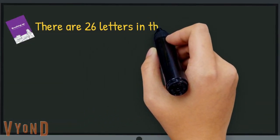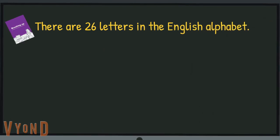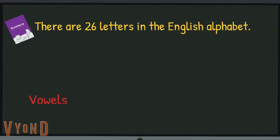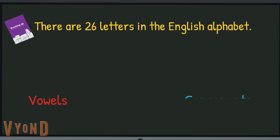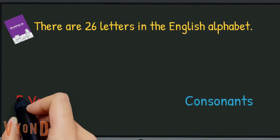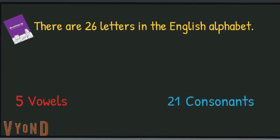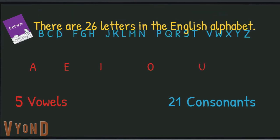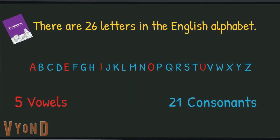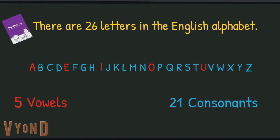There are 26 letters in the English alphabet. These 26 letters are made up of vowels and consonants. There are 5 vowels and 21 consonants. Take a look at the alphabet on the board here. The vowels are written in red and the consonants are written in blue.